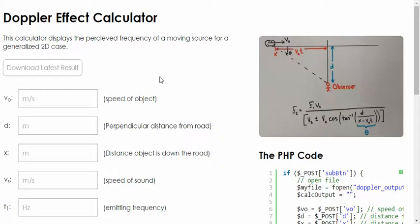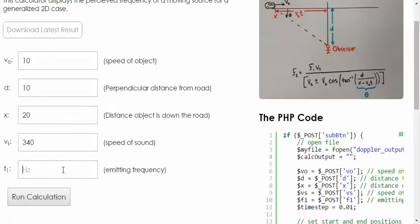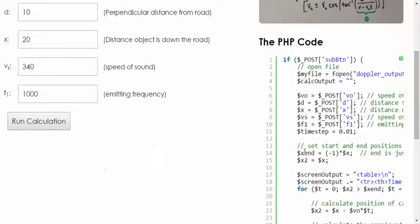Let's look at the first case and we're even going to graph these as a function of time. What we're going to look at here is some object moving at 10 meters per second. We're initially let's say 10 meters away from the road and the object is 20 meters down the road. The speed of sound let's pick 340 meters per second and we'll assume that the frequency is 1000 hertz.